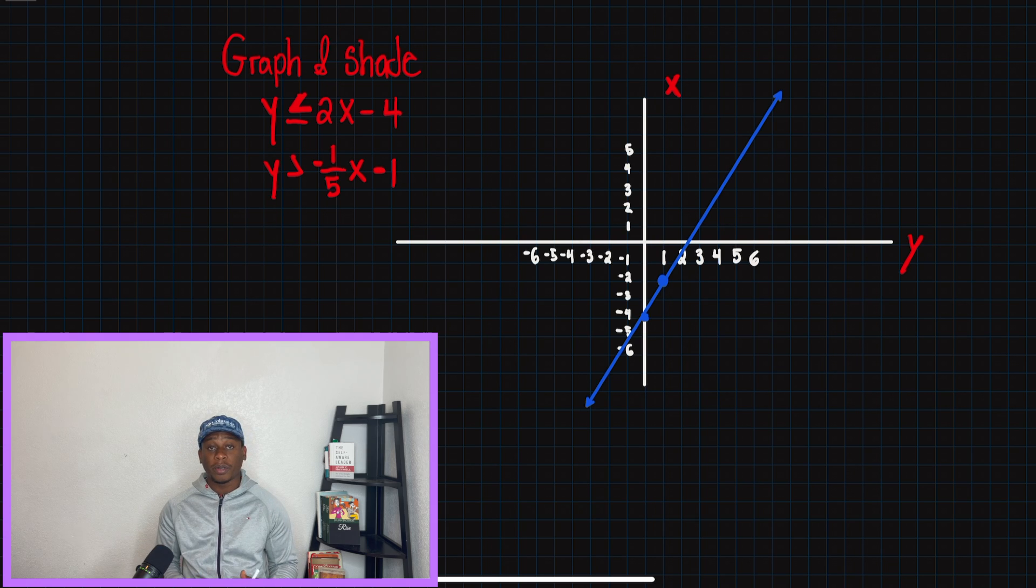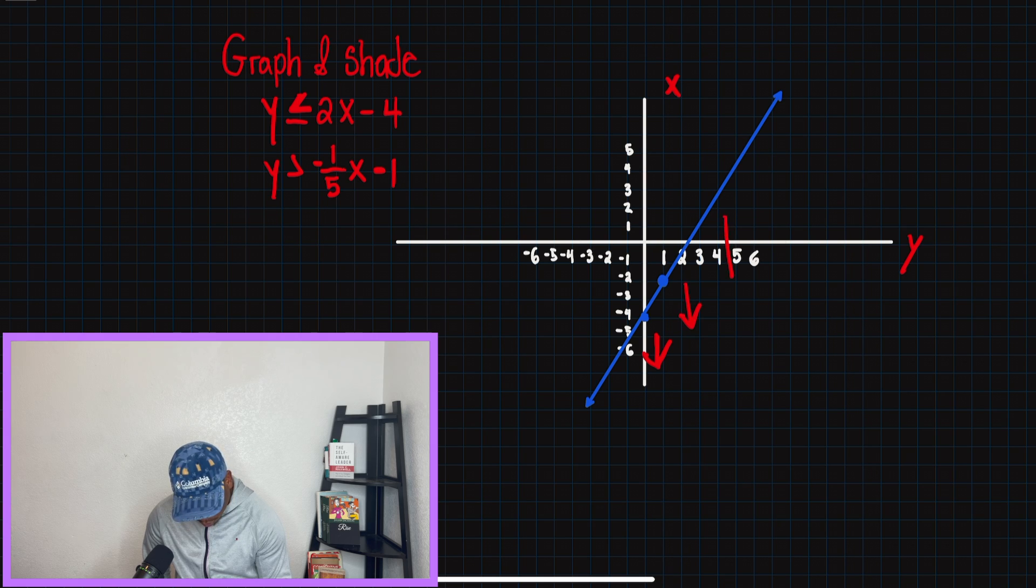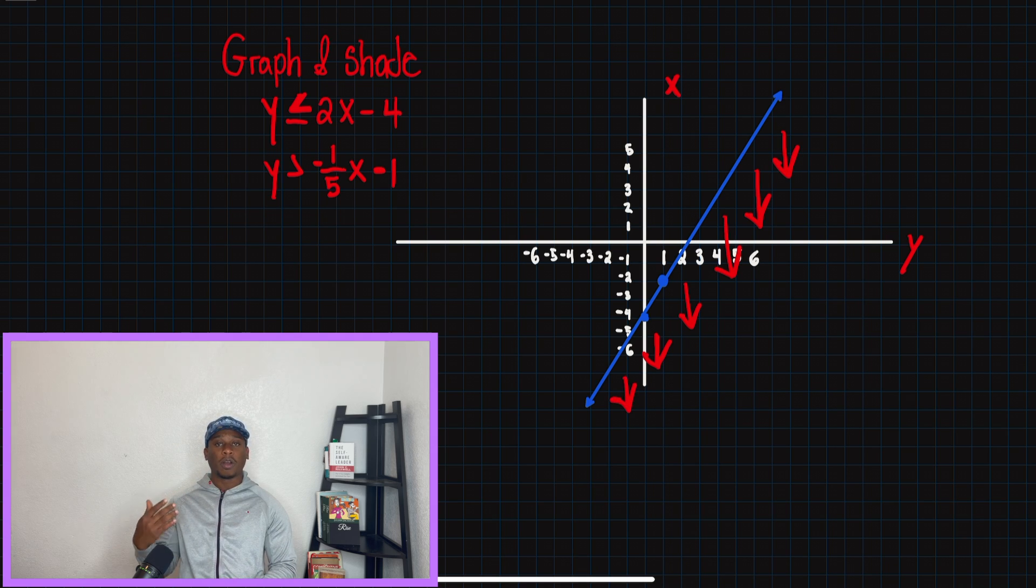And remember, when we're talking about systems of inequalities, we also have to shade. So this says that y is less than 2x minus 4. So what this means is that the shaded area should be under this line. And I'm just drawing the arrows so that when we draw our other line, we can kind of compare and see where they intersect.